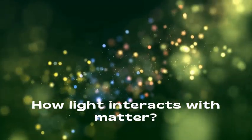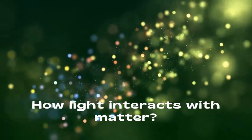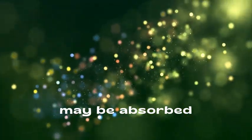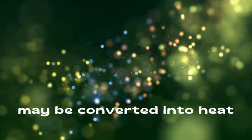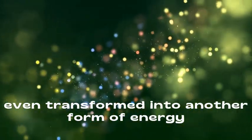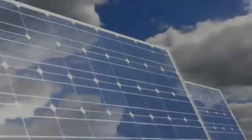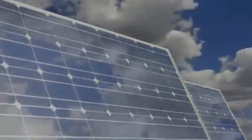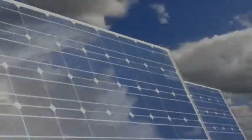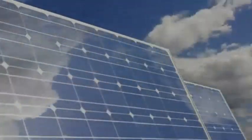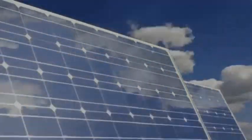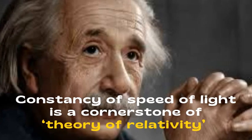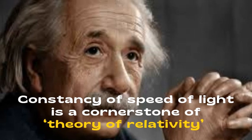But what about when light interacts with matter? This is where energy loss can occur, but it is not the same as slowing down. When light hits an object, some of its energy may be absorbed, converted into heat, or even transformed into another form of energy, like electricity in a solar panel. However, this does not mean the light itself has stopped. It simply ceases to exist in its original form. So while light can transfer its energy during interactions, it never loses energy just by traveling. In a vacuum, photons continue their journey endlessly, unchanged and unstoppable, a testament to the extraordinary properties of light.